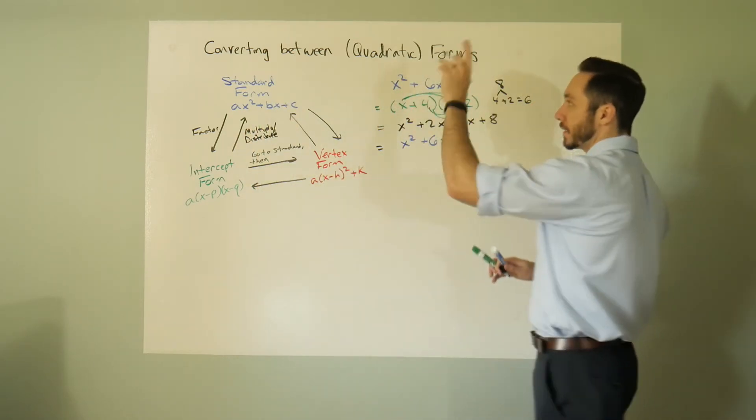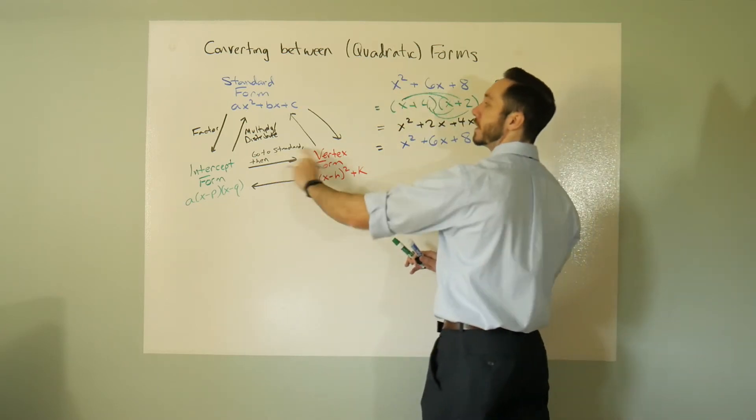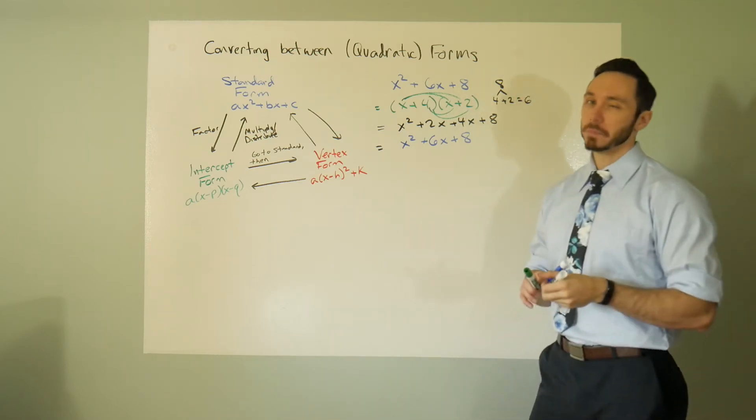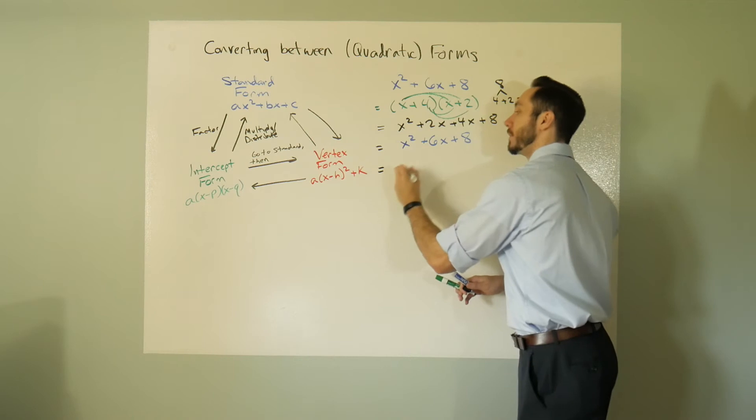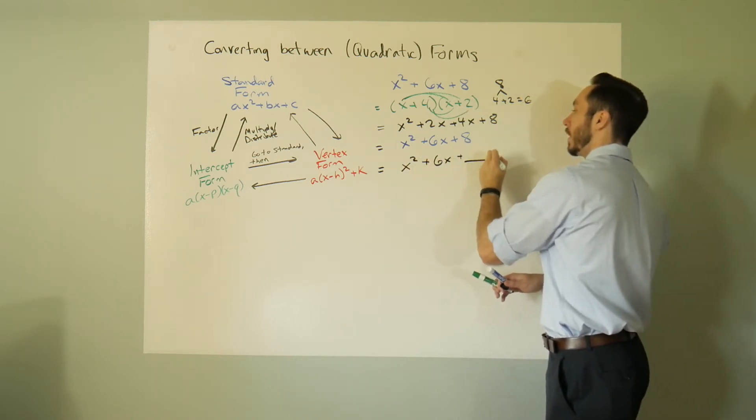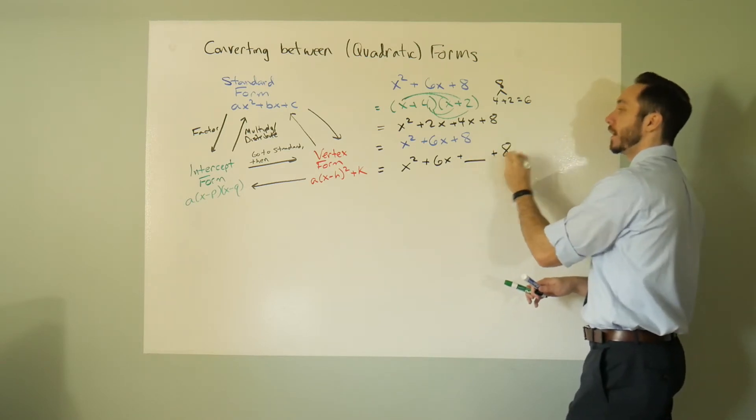But what about now standard to vertex? Because now we can two birds one stone, right? Because I can fill in this blank and I can fill in this blank right here. The way we do this is by a little process called completing the square. I like to give myself space here and I like to put this plus 8 over here.